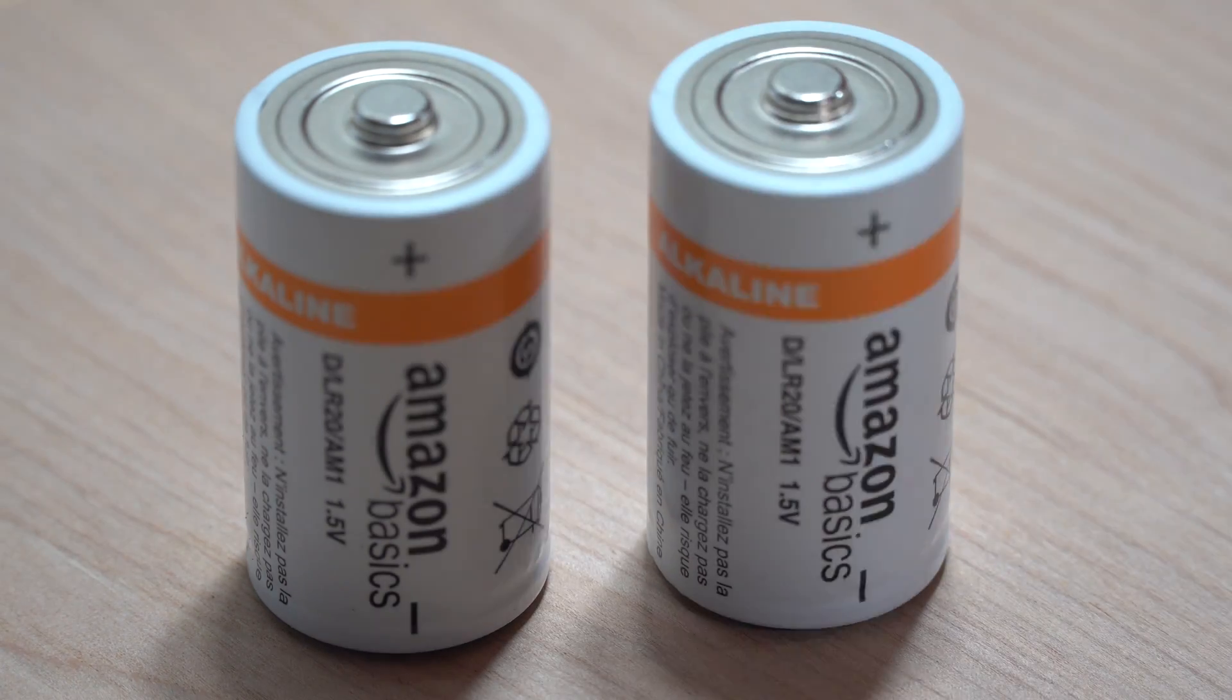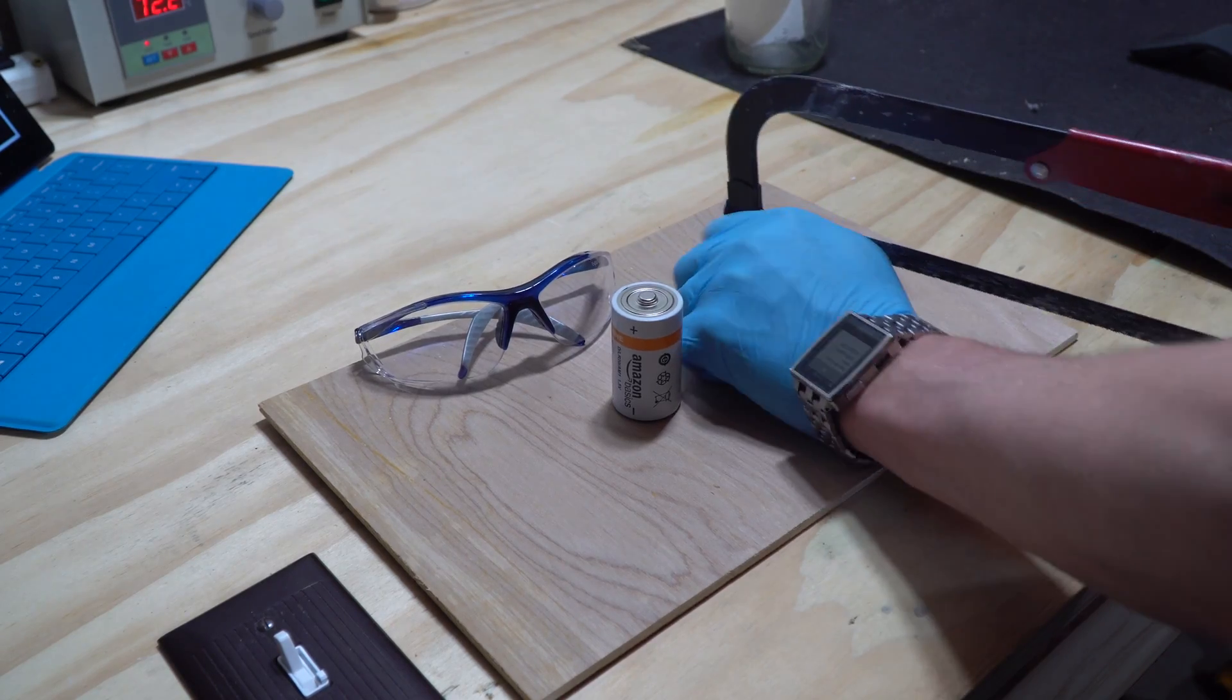As for the zinc metal in the reaction, I'll use two C batteries, which will yield me about 60 grams of zinc metal.